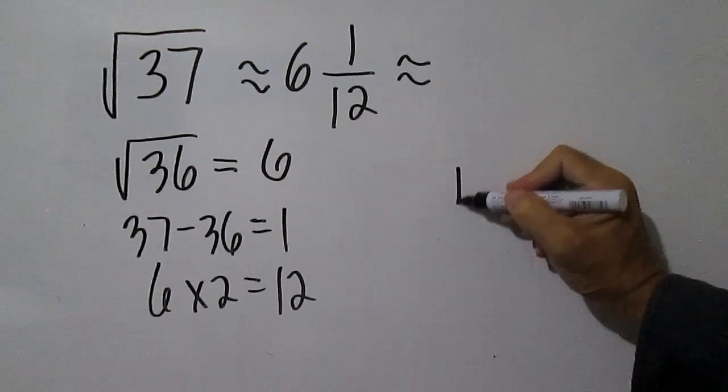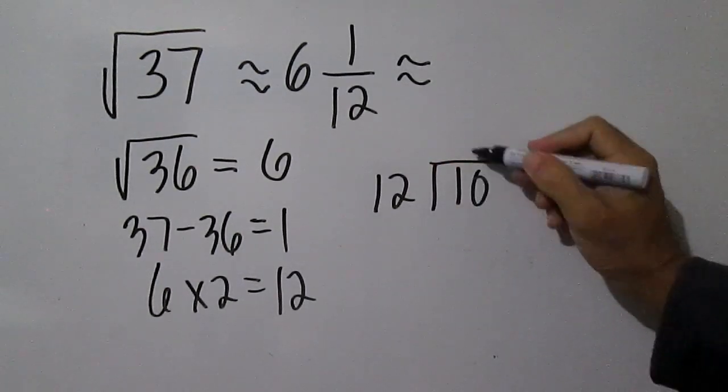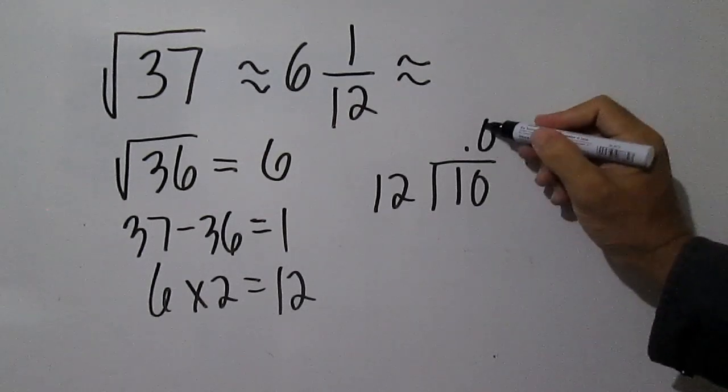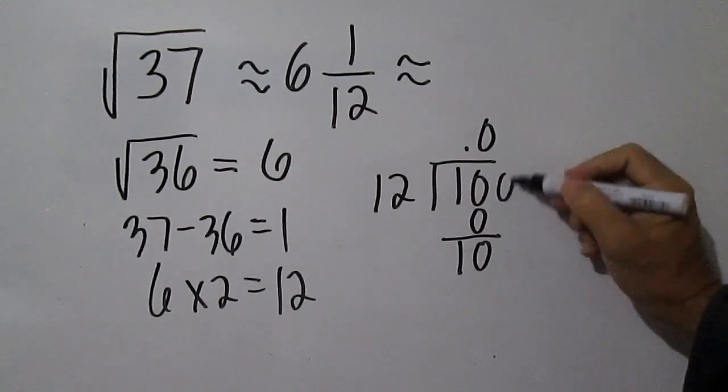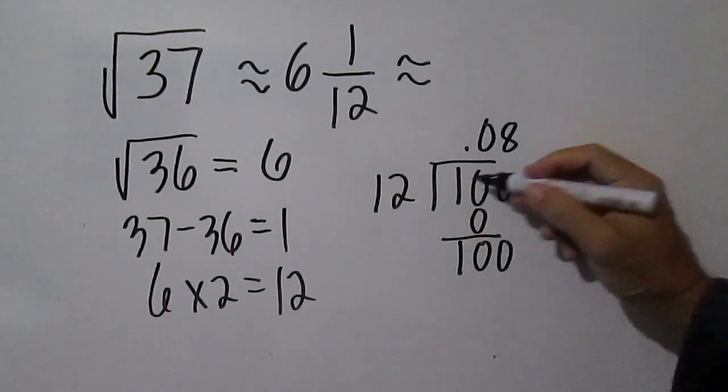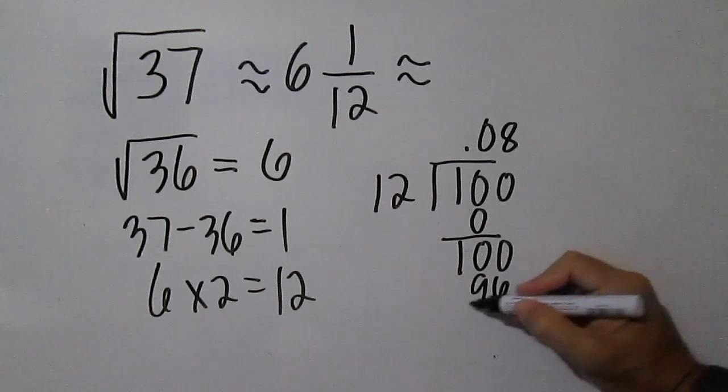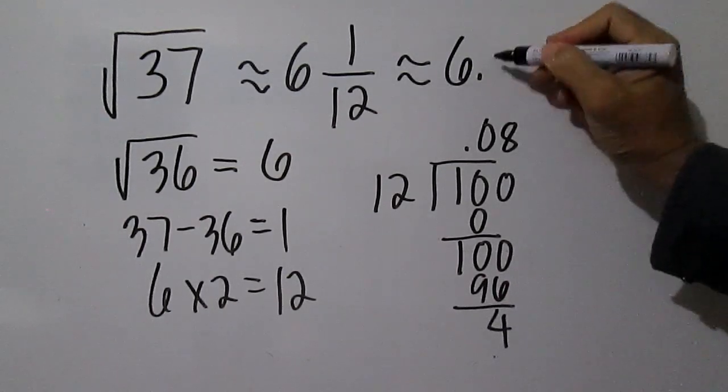Divide 1 by 12. Square root of 37 is approximately equal to 6.08.